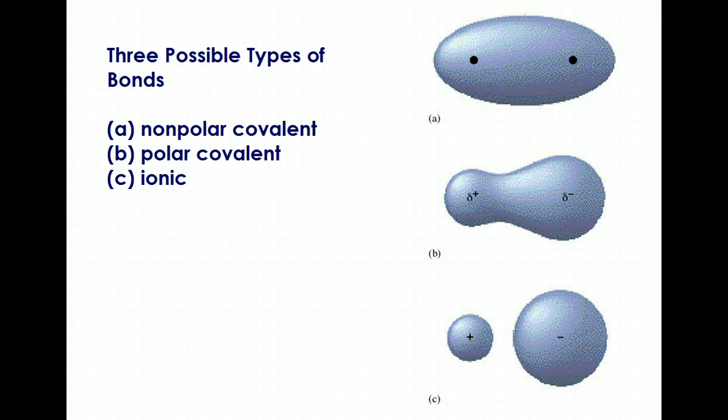This slide shows the differences between polar and non-polar covalent bonds as well as an ionic bond. With both covalent bonds, an electron pair is being shared, at least one pair. In a non-polar covalent bond, letter A, they're being shared evenly, so you see the symmetrical oval.